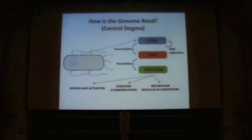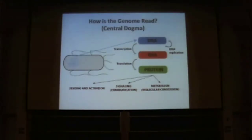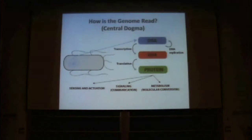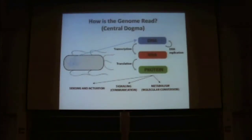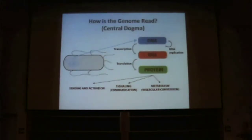So how is the genome read? This is called the central dogma. The cell has its DNA, and machinery in the cell reads that DNA in a process called transcription, converting DNA into RNA. That RNA is then converted into protein by a process called translation. The key takeaway is that DNA is read to produce protein, and proteins are the machinery that actually does the work for the sensing, signaling, and metabolism we talked about.